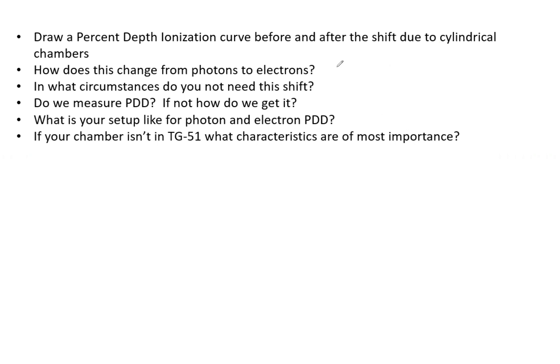Say you have a question where they ask you to draw a percent depth ionization curve before and after the shift due to cylindrical chambers. How does that change from photons to electrons? In what circumstances do you not need that shift? Do we measure percent depth dose? And if not, how do we get that? What is your setup like for photon and electron PDDs? And if your chamber isn't in TG51, what characteristics are most important to determine what some of those important values are based in the tables of TG51?